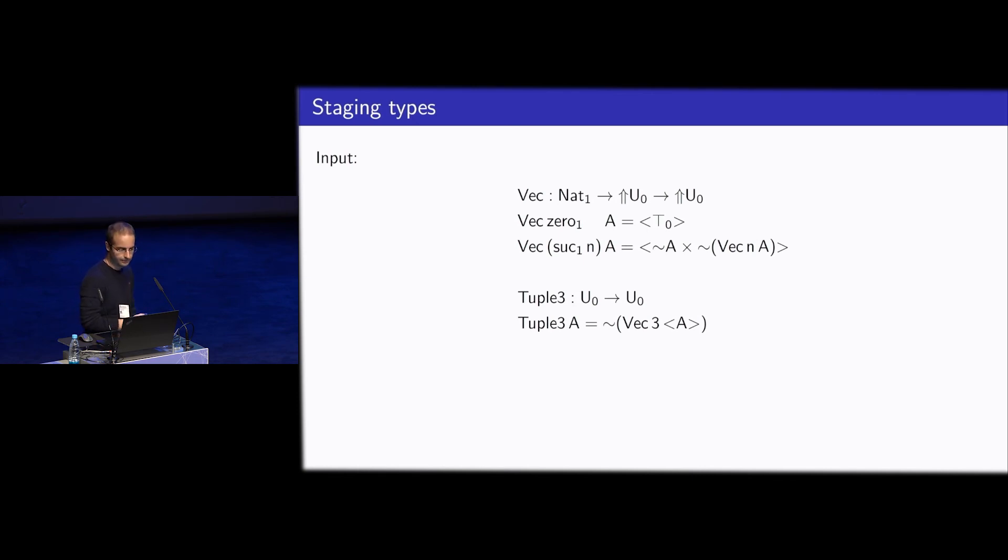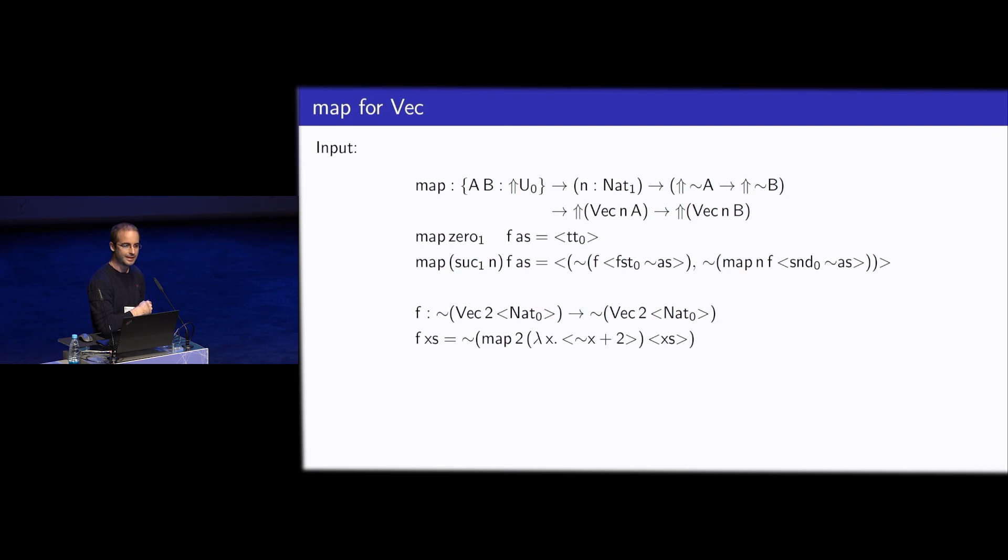We can also stage types. So if I have a compile time natural number, I can, by induction on that natural number, compute the type expression in the runtime language. So here I'm using an Agda-like pattern matching notation for doing induction on the compile time natural number. And you can see that what happens here is that I'm computing a nested tuple of certain length. So if I use induction on compile time data, I can compute types. And I can also use then dependent elimination on compile time data to define dependency typed programs over these computed types.